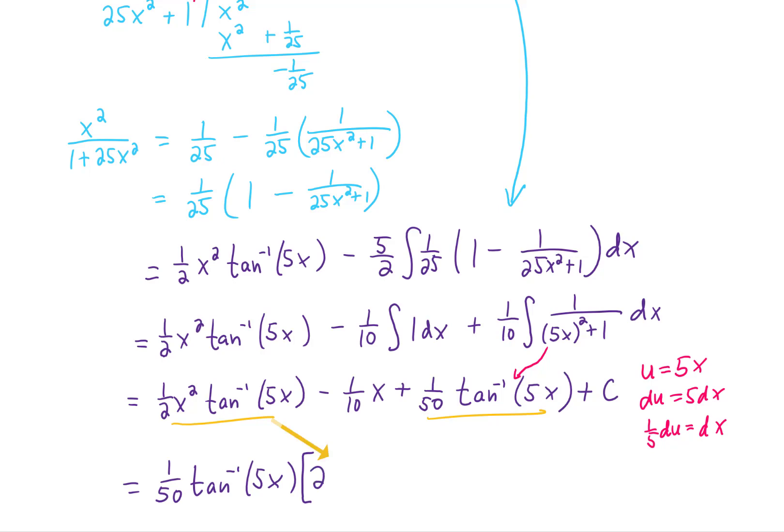what's going to be left from the first term is a 25x squared. And from the second term, just simply a plus 1. Then what remains is a 1/10th x plus c. And that answer looks really nice to me.